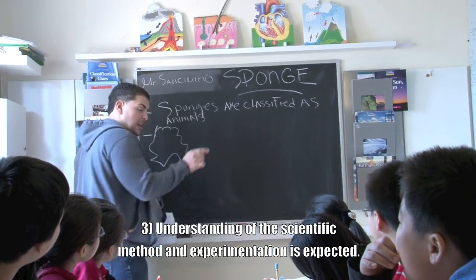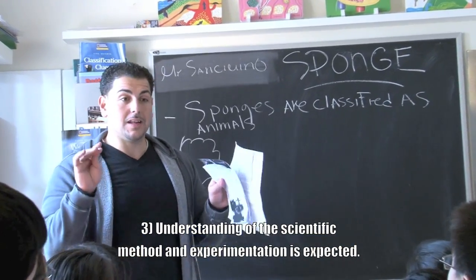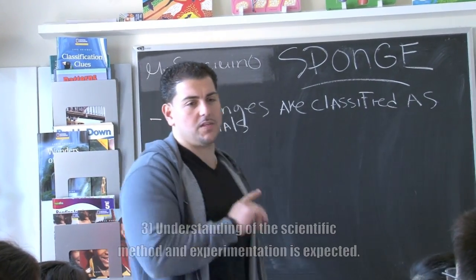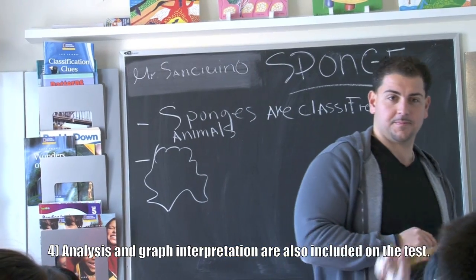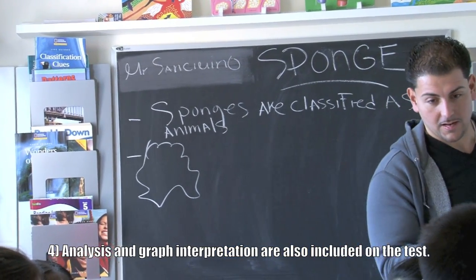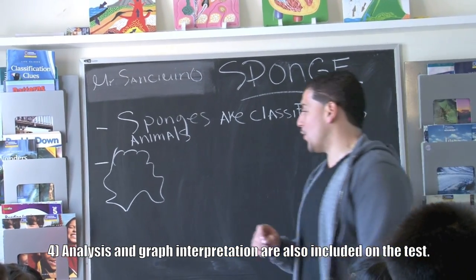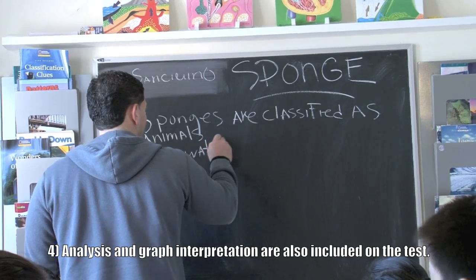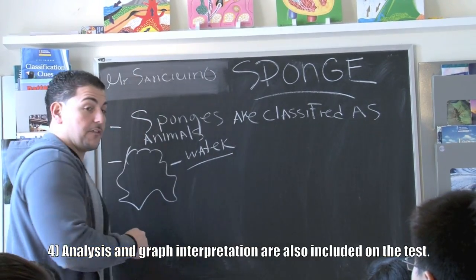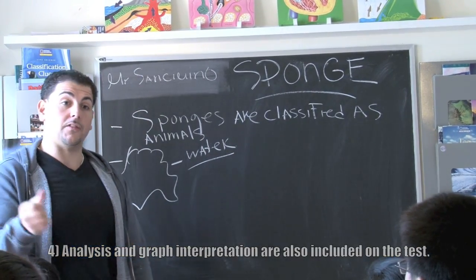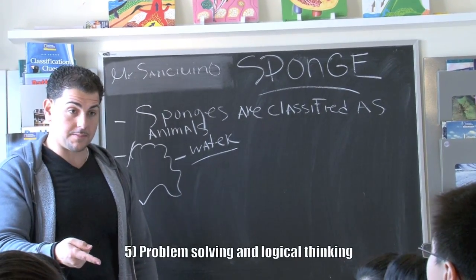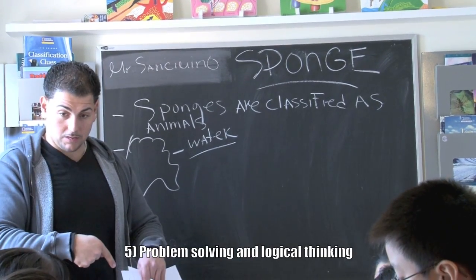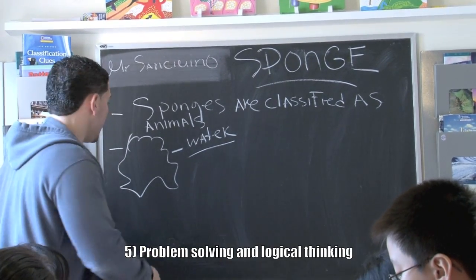Sponges can have any different shape. A sponge has no definite shape. What else in science takes no definite shape or form? Water. Water, very good. So water, like a sponge, takes no definite shape. For example, if you pour water into a cup, will it become the cup? Yeah. If you pour water into a bowl, will it become the bowl? Yeah. Right, so it's very flexible.